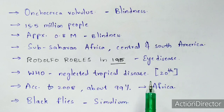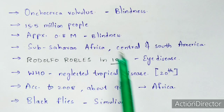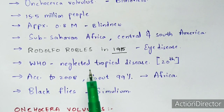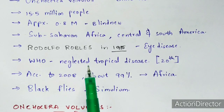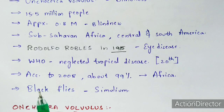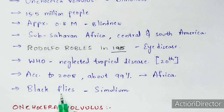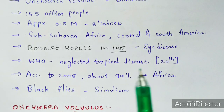According to a 2008 survey, about 99% of the disease burden comes from Africa. The main cause of onchocerciasis is black flies, which belong to the genus Simulium.